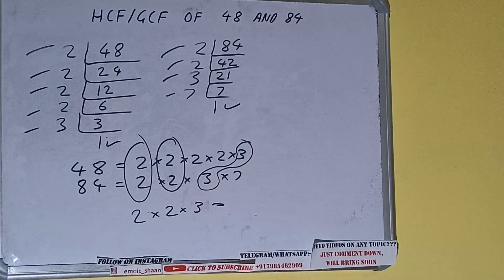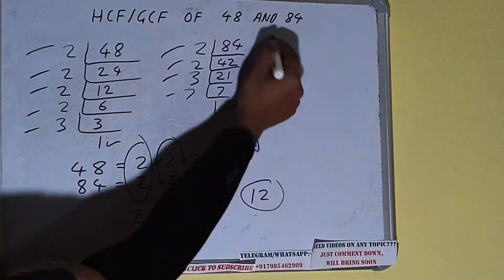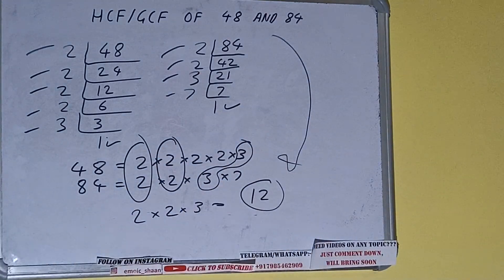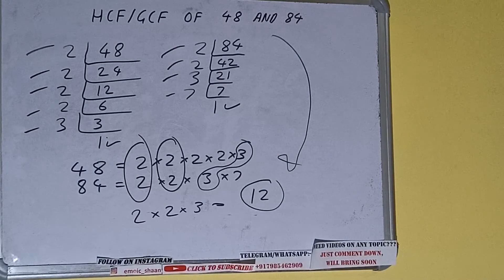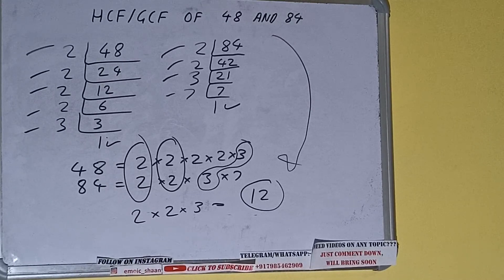2 times 2 is 4, and 4 times 3 is 12. So the answer will be 12 — the HCF or the GCF of the numbers 48 and 84 is 12. This is all! If you found the video helpful, please hit the like button, do consider subscribing, and thanks for watching.